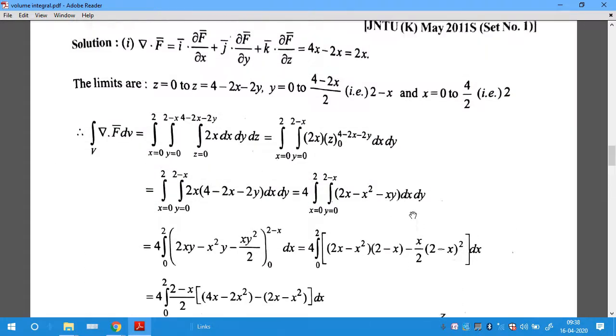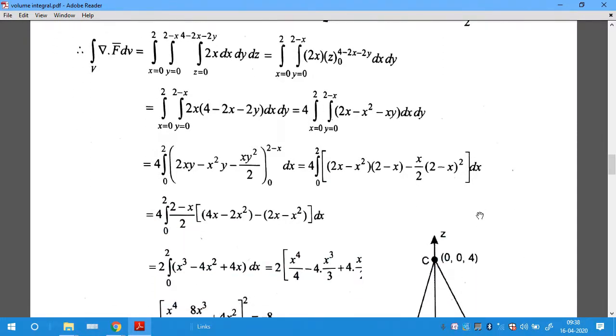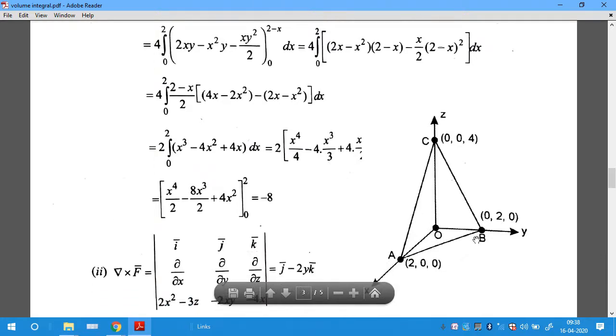The plane equation 2x+2y+z=4 is intercepted by the x-axis at (2,0,0), the y-axis at (0,2,0), and the z-axis at (0,0,4). Now we evaluate the volume integral. First, we compute ∇·F̄.